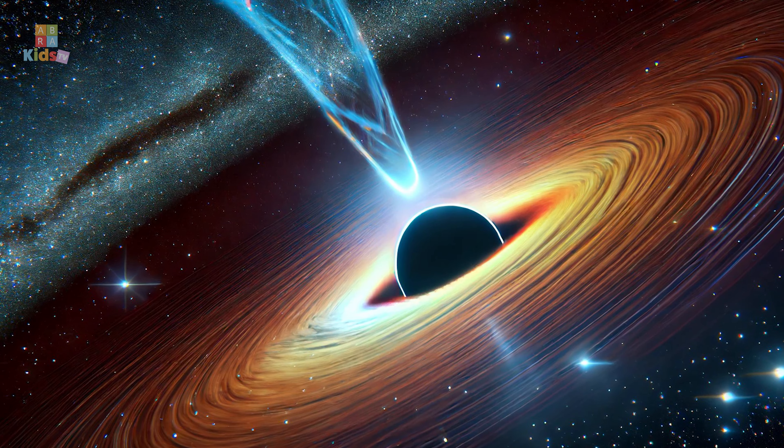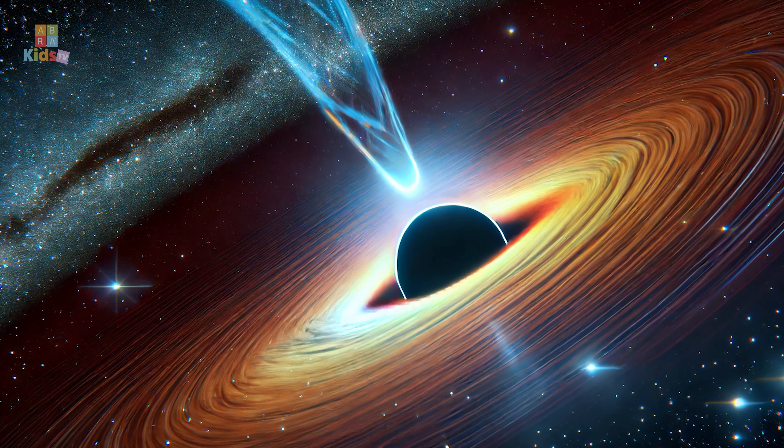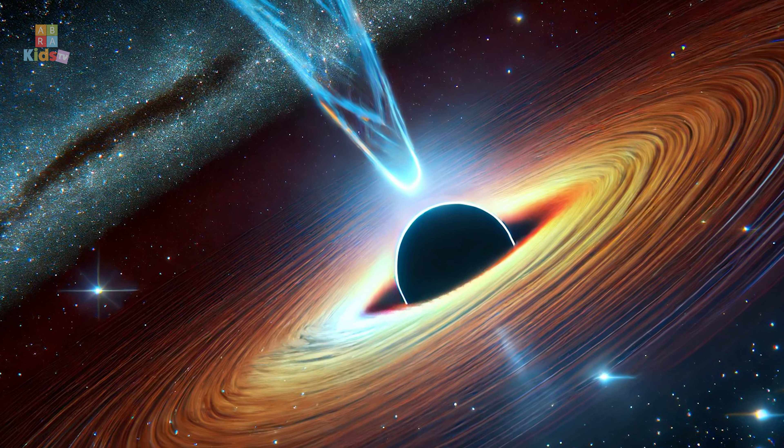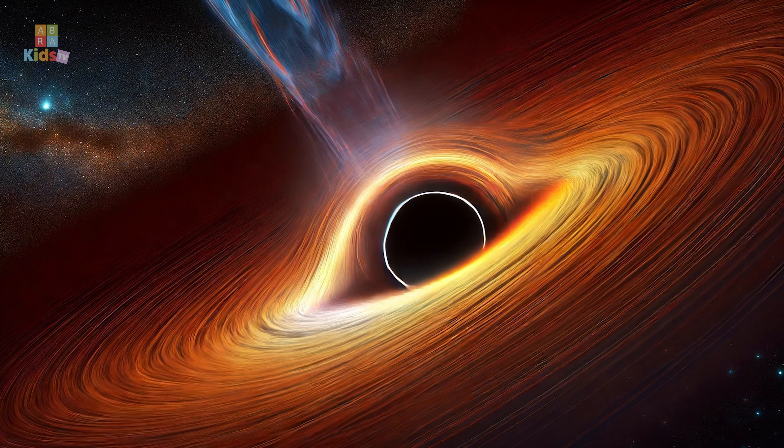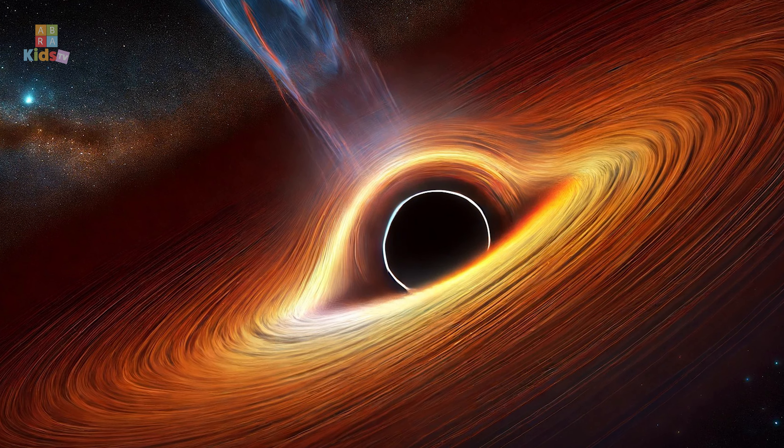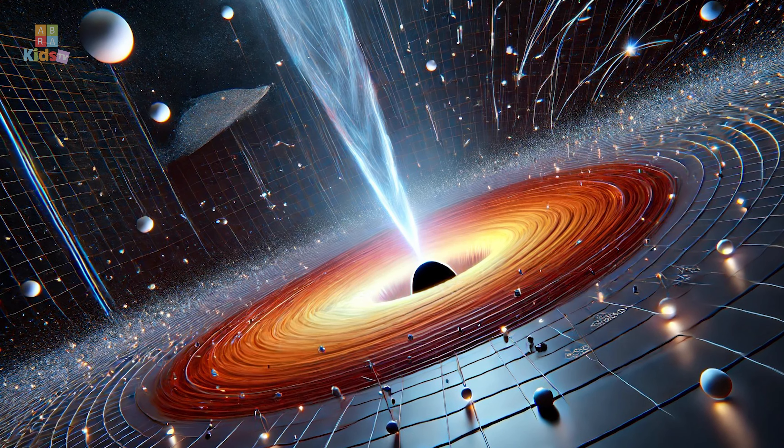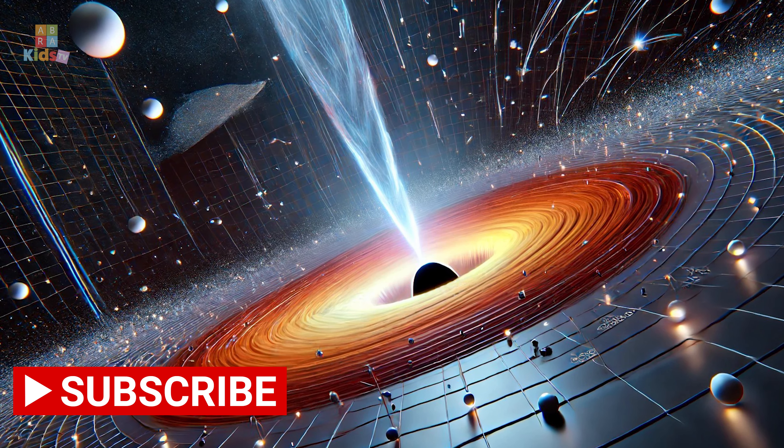The event horizon is significant because it marks the limit where the escape velocity equals the speed of light. This means that not even light, the fastest thing in the universe, can escape the black hole's gravitational pull once it crosses the event horizon.